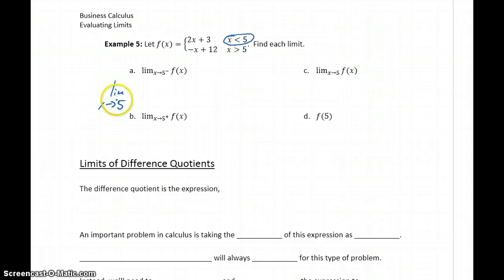The limit as X approaches 5 from the left of f of X is the limit of 2X plus 3. This is a polynomial function so we can use direct substitution to get 2 times 5 which will be 10 plus 3 or 13 as our limit.